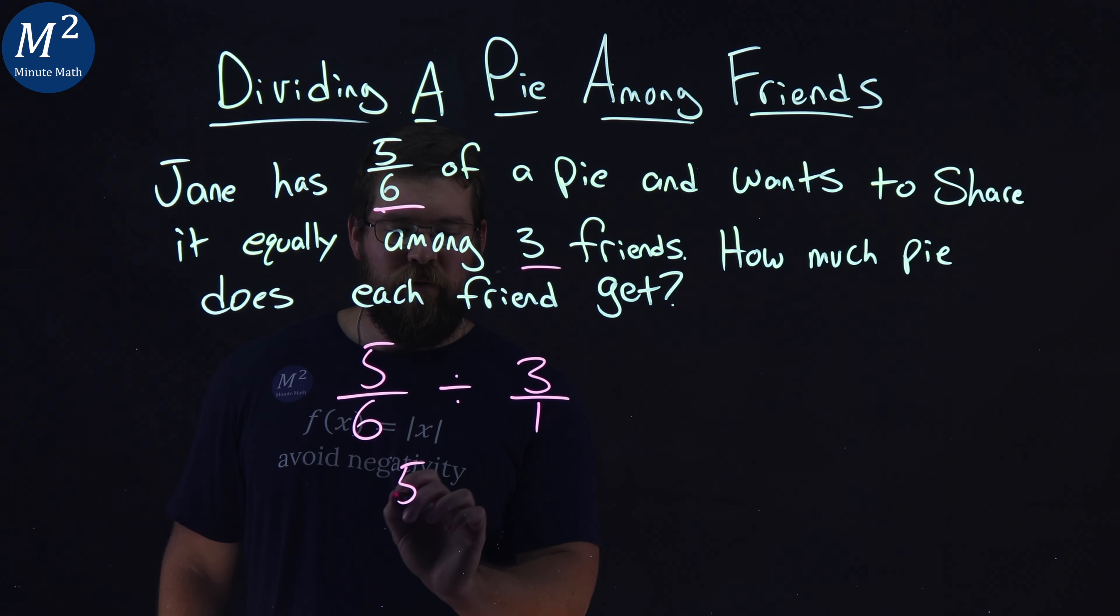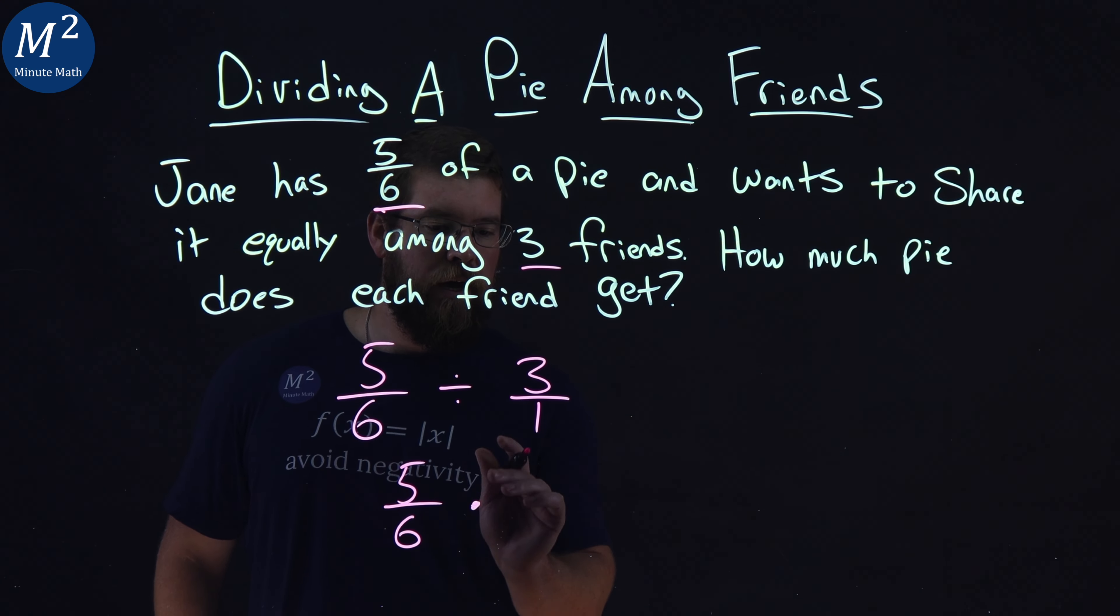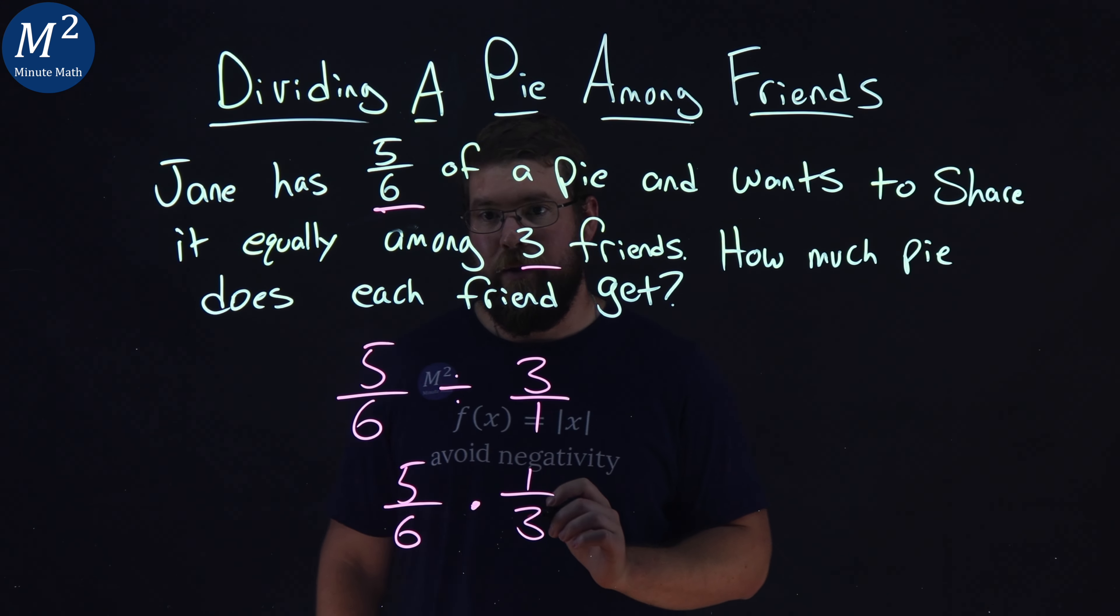So now we can rewrite this to be five-sixths multiplied by, let me flip this, one over three, one-third.